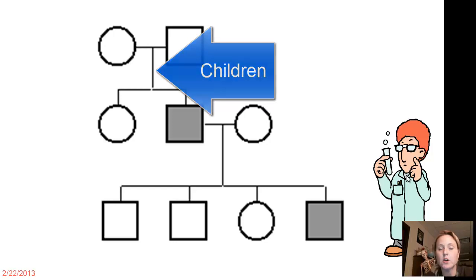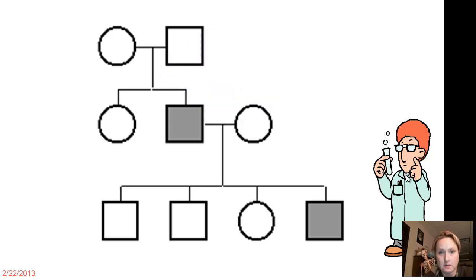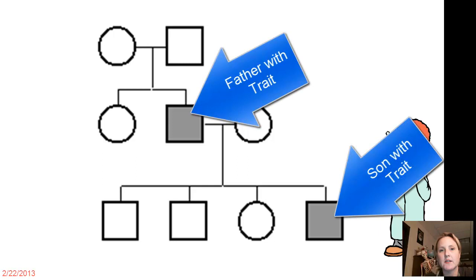A boy and a girl. The boy was then married to a female and they had four children. Three boys and one girl. Now whatever trait or disorder that this pedigree is looking at, we can tell that the father had the disorder and also that his son had the disorder.